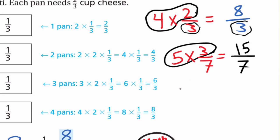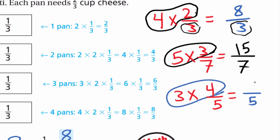Another example: 3 × 4/5. We keep the 5, and we multiply 3 × 4 = 12, giving us 12/5. It's really simple — you just multiply the whole number by the numerator and keep the denominator. So 4 × 2 = 8, keep the 3, giving 8/3.